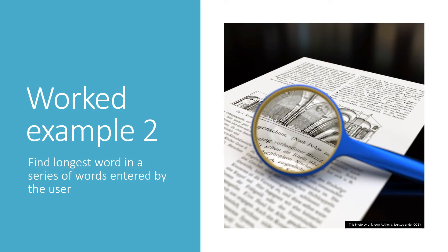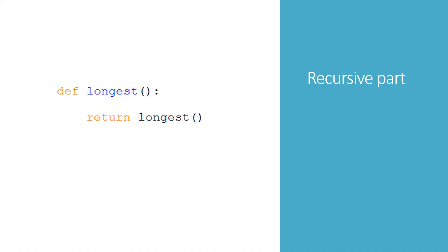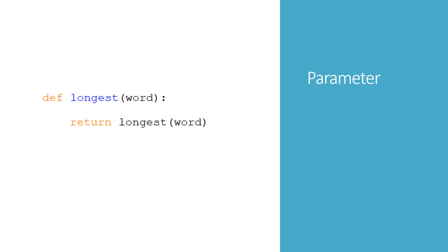Let's create a function that finds the longest word of a series of words entered by the user. Once again, we'll start by doing the recursive part. I'm going to call this function longest — so def longest starts the function, and return longest is the recursive part. Now I'm going to add a parameter. The value I need to pass along the chain is the longest word, so I'm going to call my parameter word, which comes in at the top and at the bottom of the function.